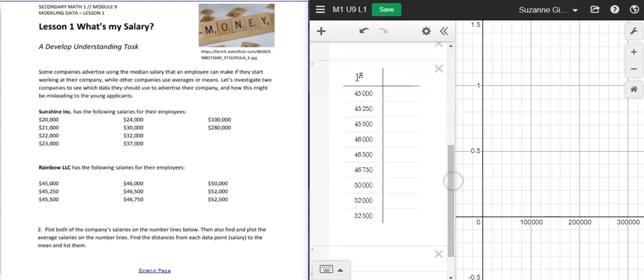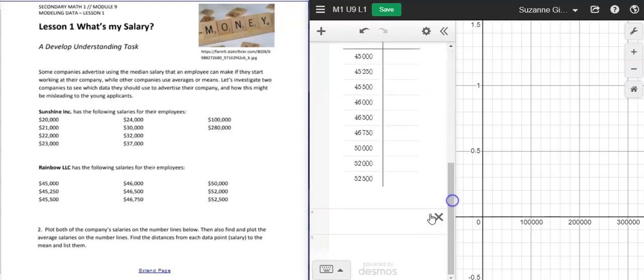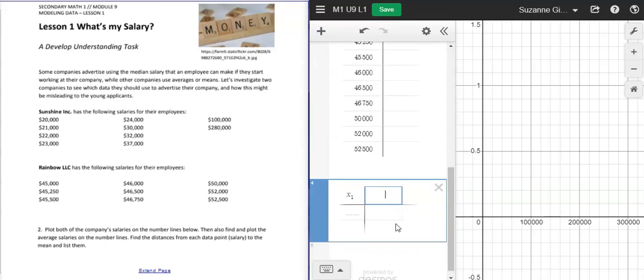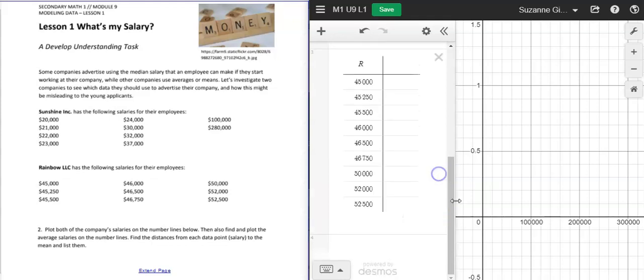And then down here, I just created a table. To put that data in, you just add a table and you can delete out the second column because this is one variable statistics, and you title it whatever letter you would like. That's going to be important and you'll want to make sure you have a variable here. And then you just type in your data. I've already typed mine in.